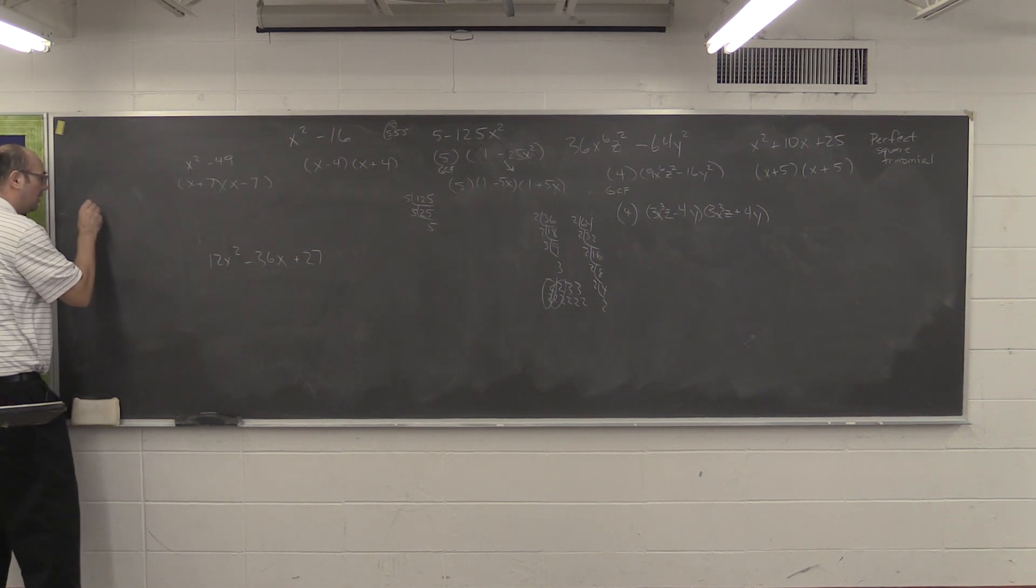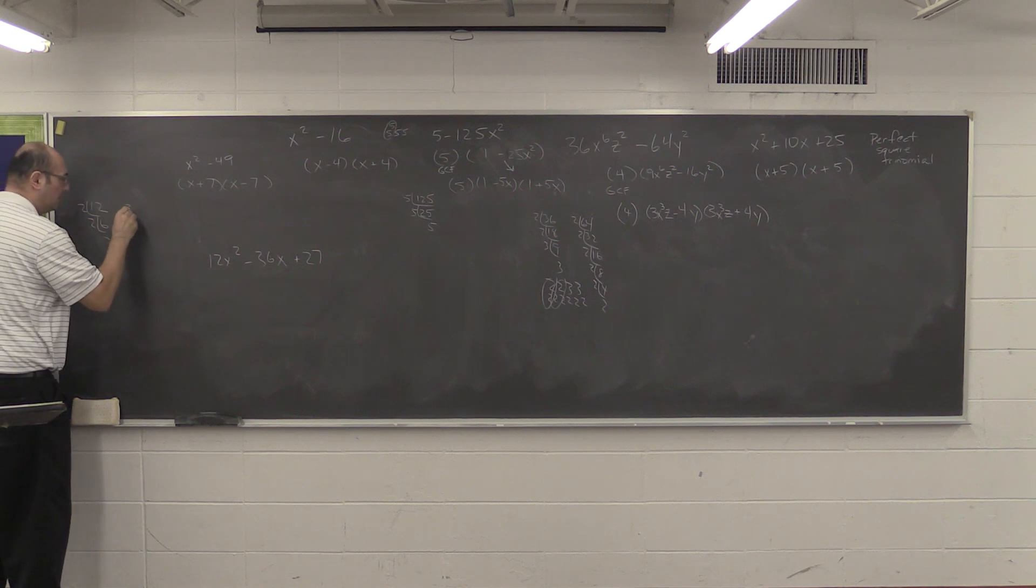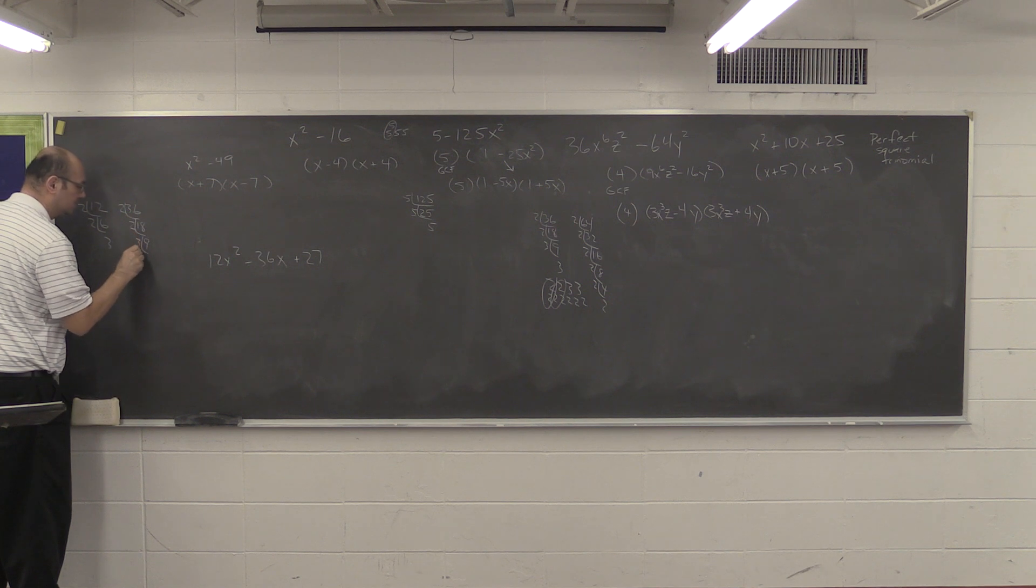So, let's take our 12, break it down, and divide it to the prime. We have 2 times 2 times 3. 36 is going to be 2 times 2 times 3 times 3.